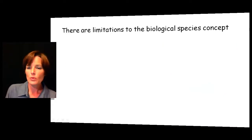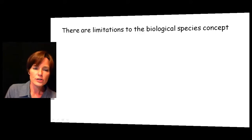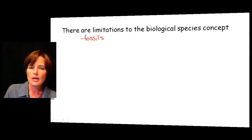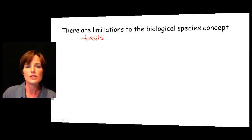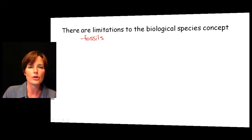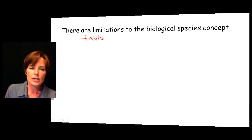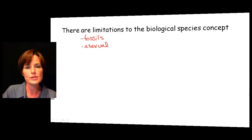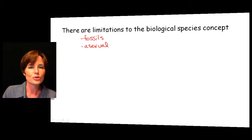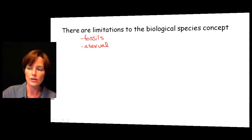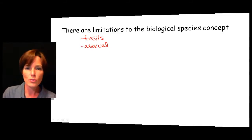Those are the ways we typically define species using the biological species concept. However, there are some problems: what if you're just looking at fossils? If we're talking about old species, they may just be fossils, so we may not be able to look at whether those two similar-looking organisms would have been able to mate and produce viable offspring — there's really no way to know from a fossil alone. Another problem is that many species are asexual and reproduce asexually on a regular basis, so we can't really evaluate whether they are successfully able to reproduce and produce viable offspring with each other. This is not an all-inclusive way to define a species — it works in a lot of cases, but there are some issues.